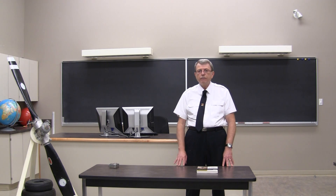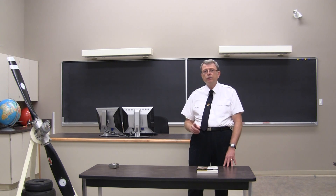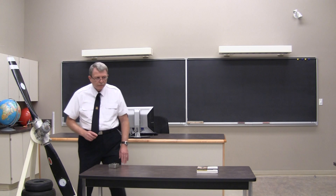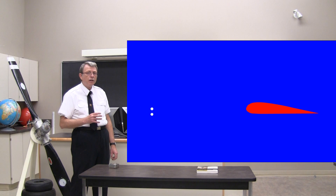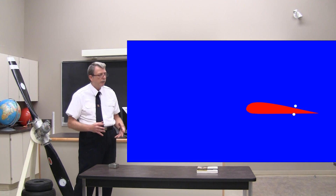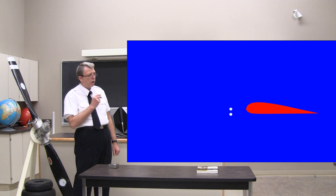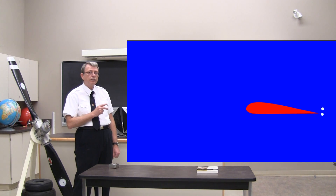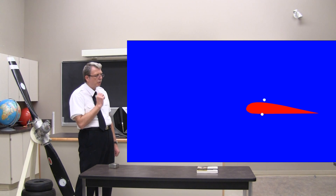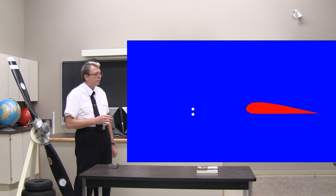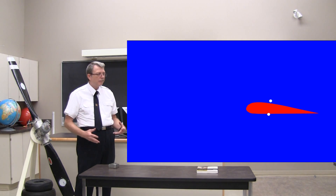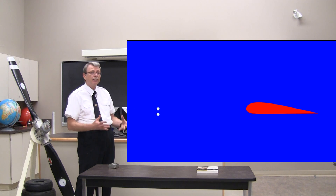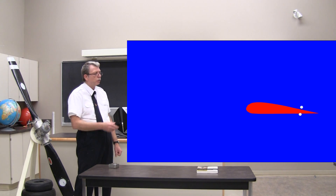Out on the internet, you find a lot of animations that show the standard explanation of how a wing produces lift. Here's a typical one. I created this one so that I could work with it, but it's typical of what you find online. Here we have two parcels of air approaching a wing, splitting at the leading edge. The lower parcel travels along the bottom unaffected, and the upper one travels around the curved surface over the top. The claim is that you can see the acceleration of the air as it travels over the top of the wing.